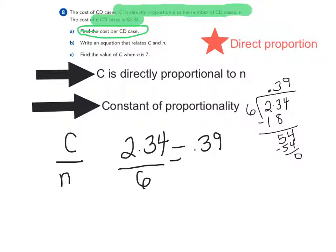So how do I use that in the equation? Well, I know my equation is going to be C equals some number times N, because the cost increases by a certain amount every time I add an additional CD case.